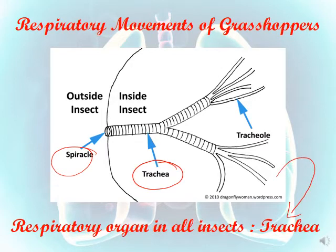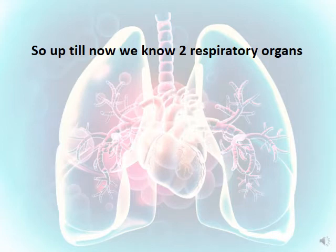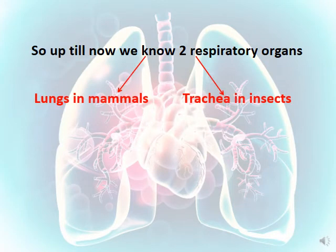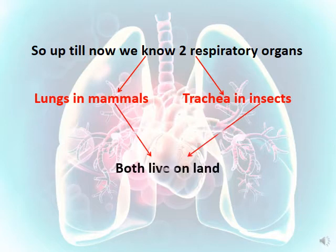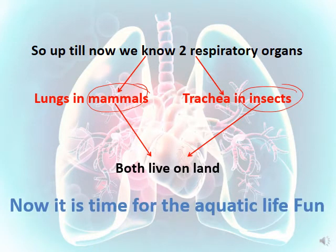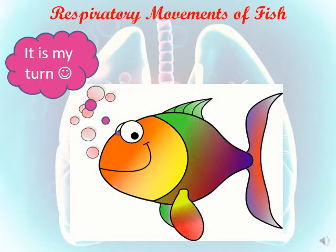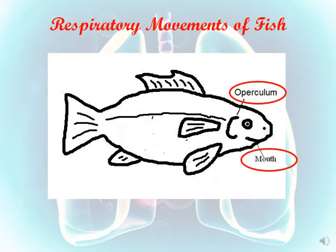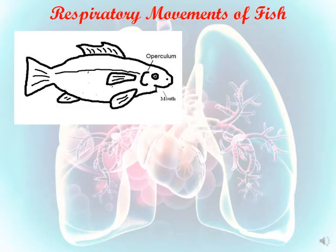So now we have two respiratory organs: the lungs in mammals and the trachea in insects. Both mammals and insects live on land. Now it's time for aquatic life — the fish says it's its turn! The fish has two important organs involved in respiration: the mouth and the operculum. In the first figure, the mouth is open while the operculum is closed.